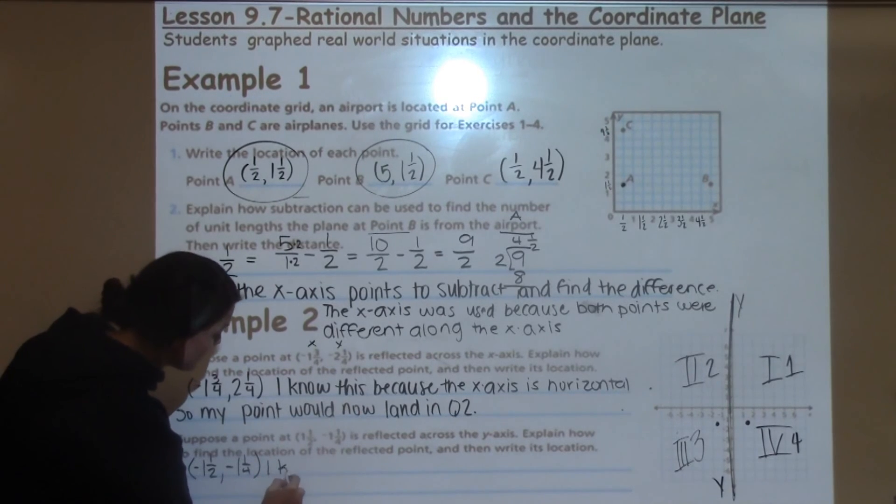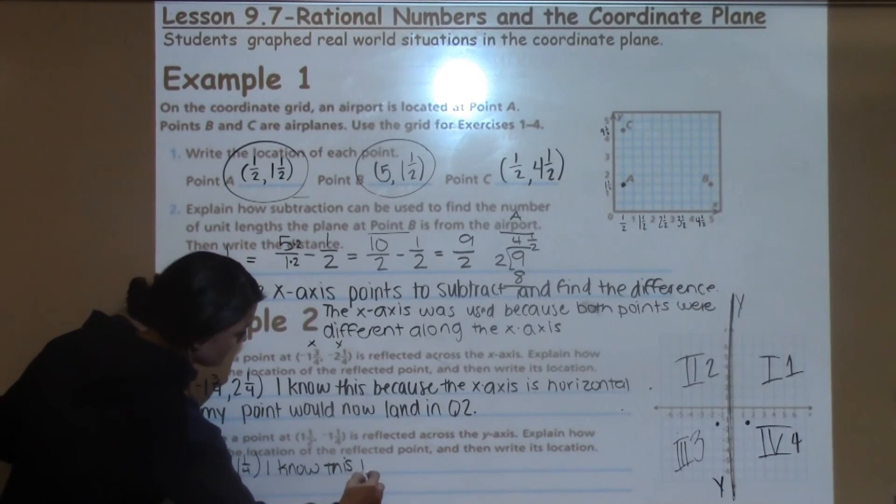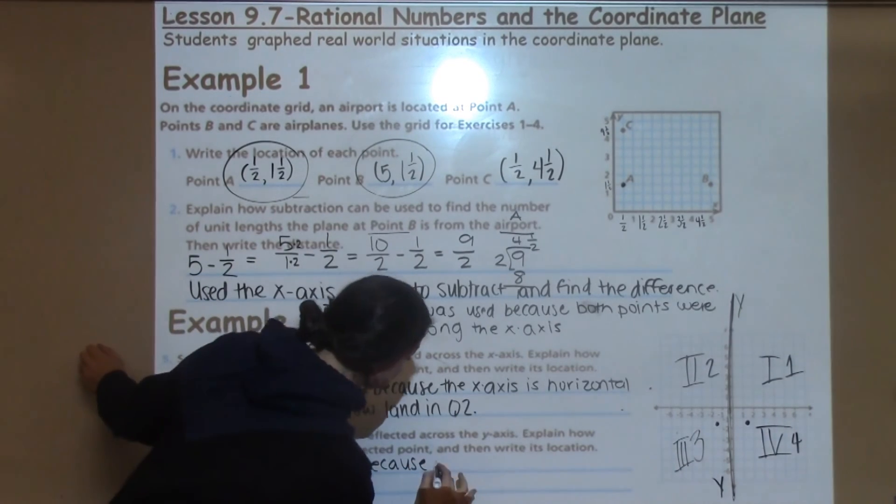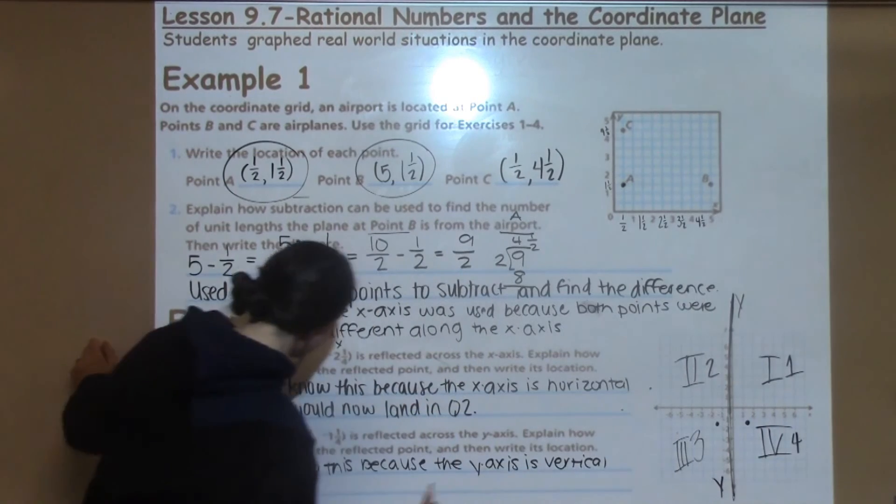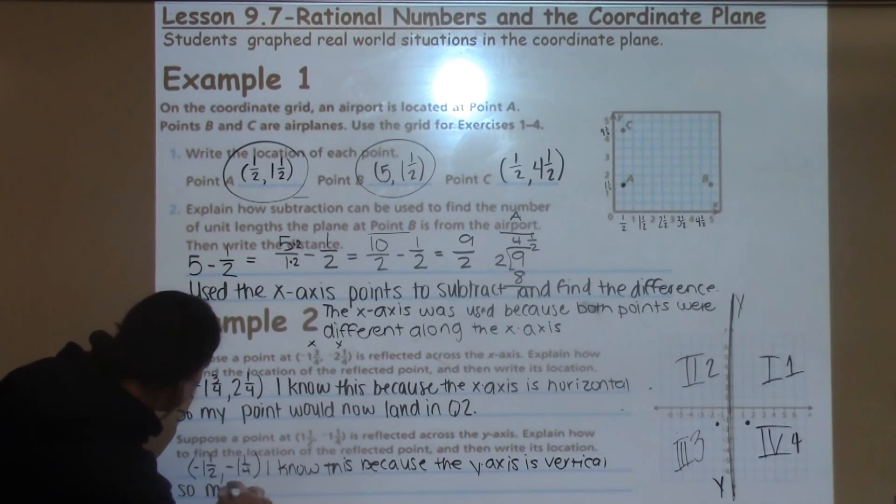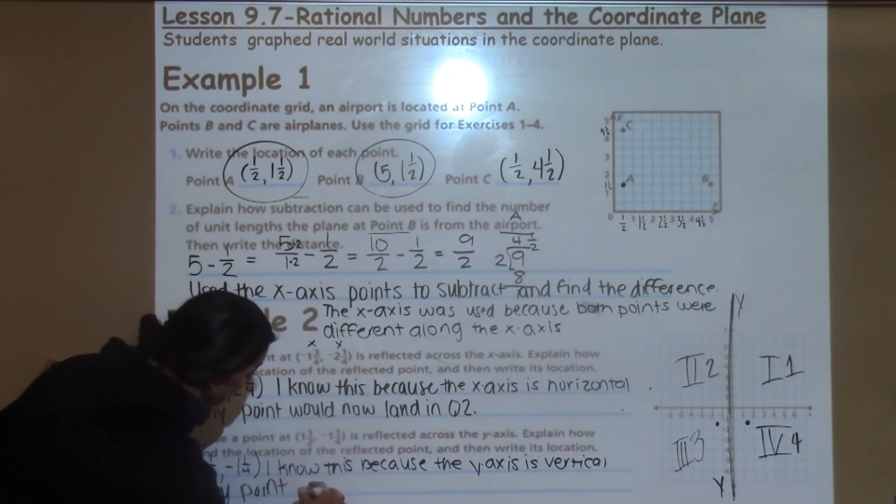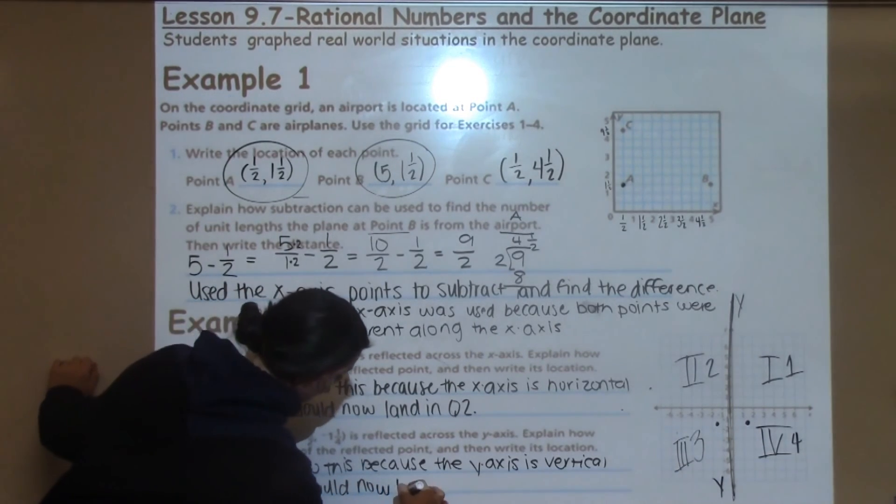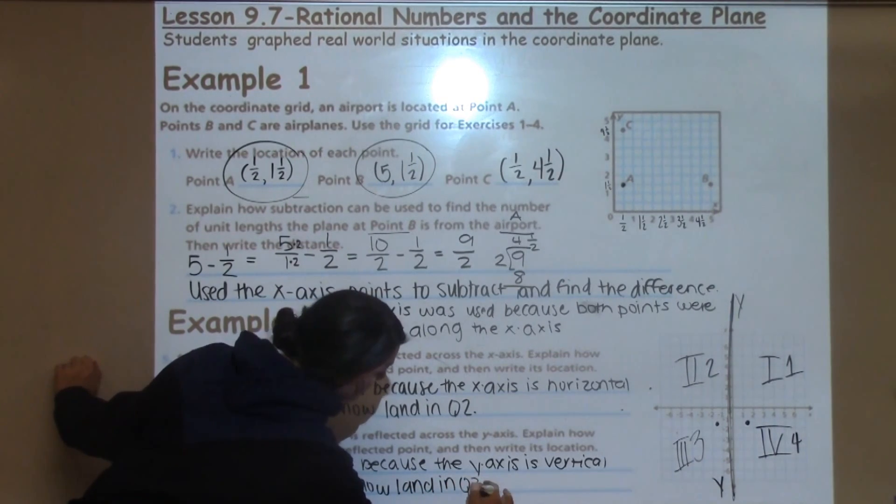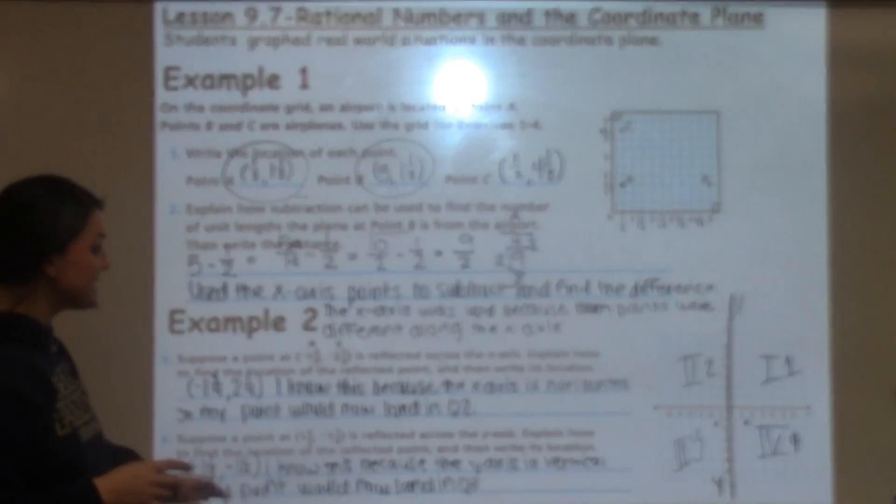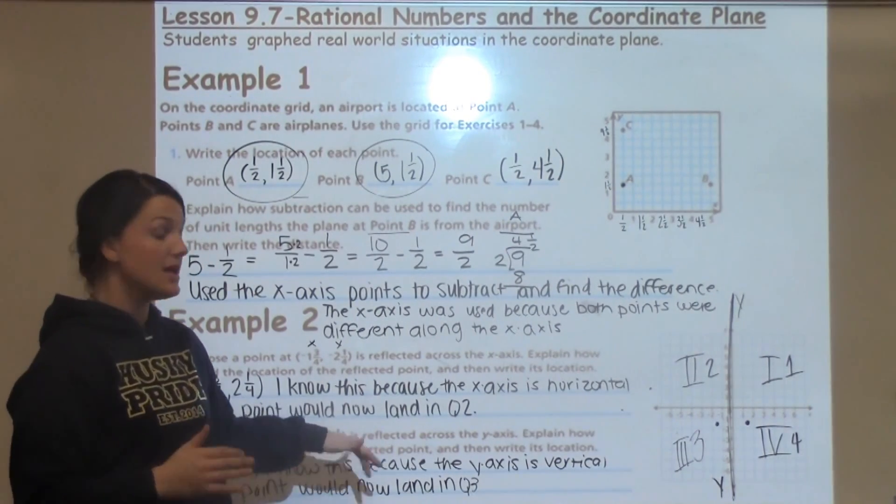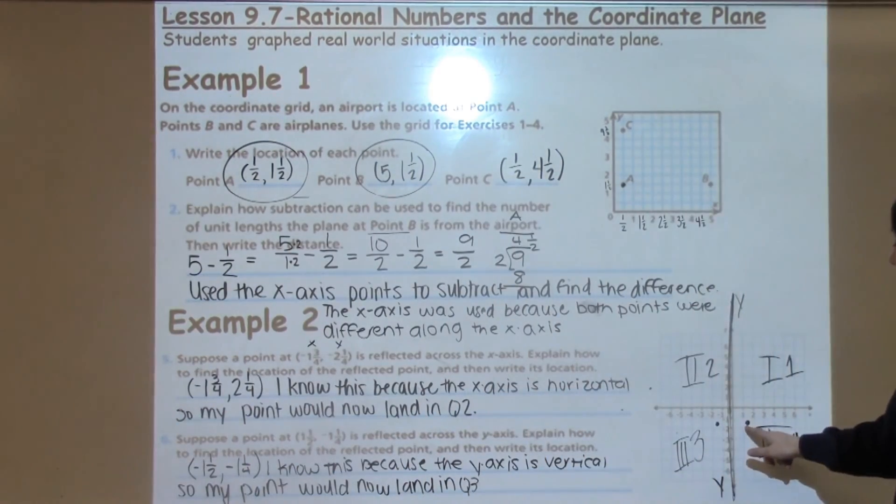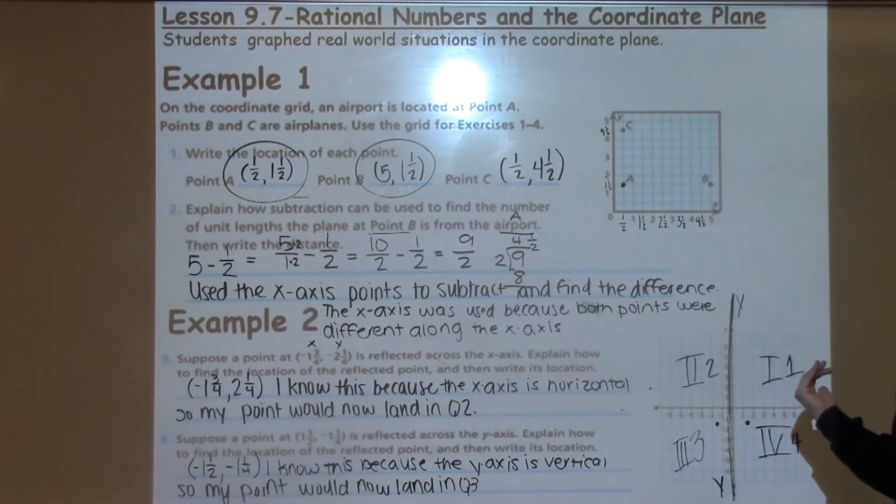So it is important to remember, as you're talking about this with your students and giving them reminders, the numbers of where the points land does not change. The reflection is going to keep it in the same location or the same numbered location, but it's going to change whether it's positive or negative depending on what quadrant it falls in and what axis you're reflecting over.